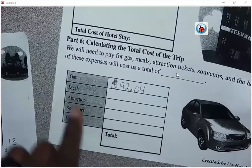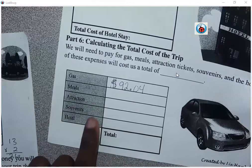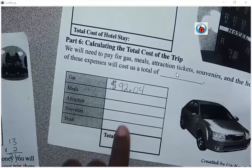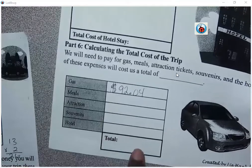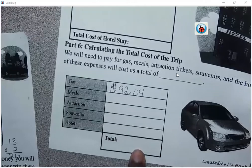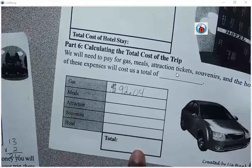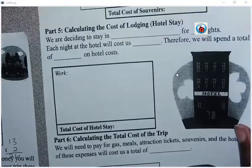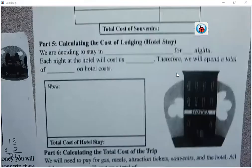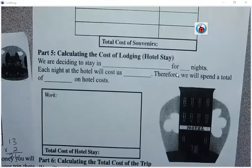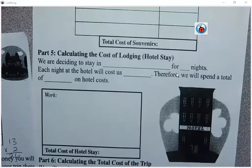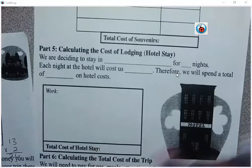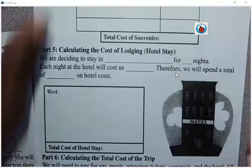So for my meals, my attraction, my souvenirs, my hotel — all of those totals will add everything up, and that's my total price of the trip. I hope that was helpful and you're able to get this done. Remember to use the calculator, check your work, and show your work in the boxes. Have a good one.